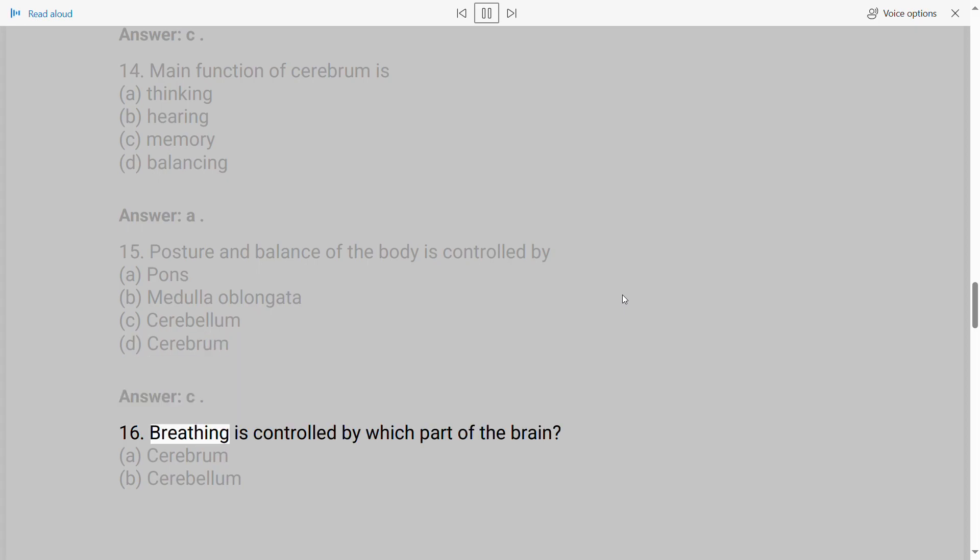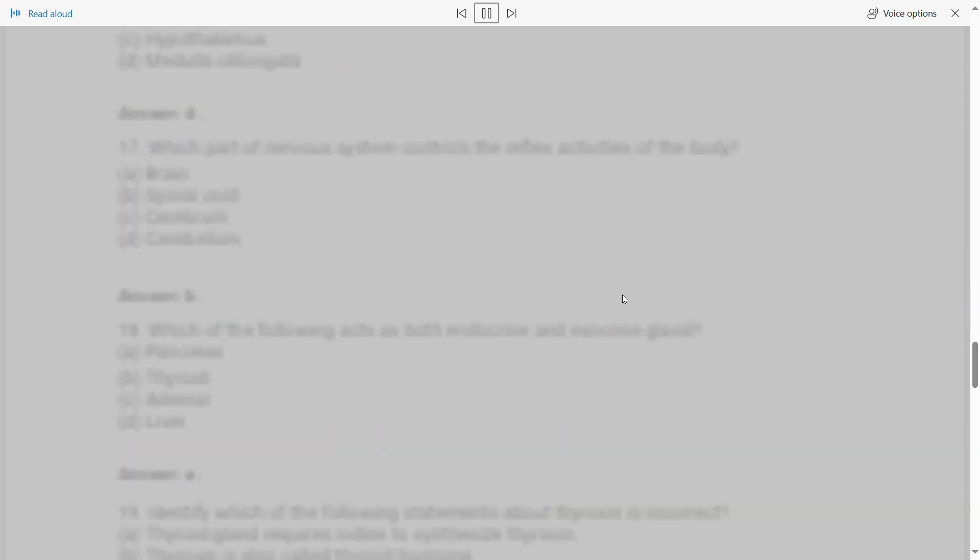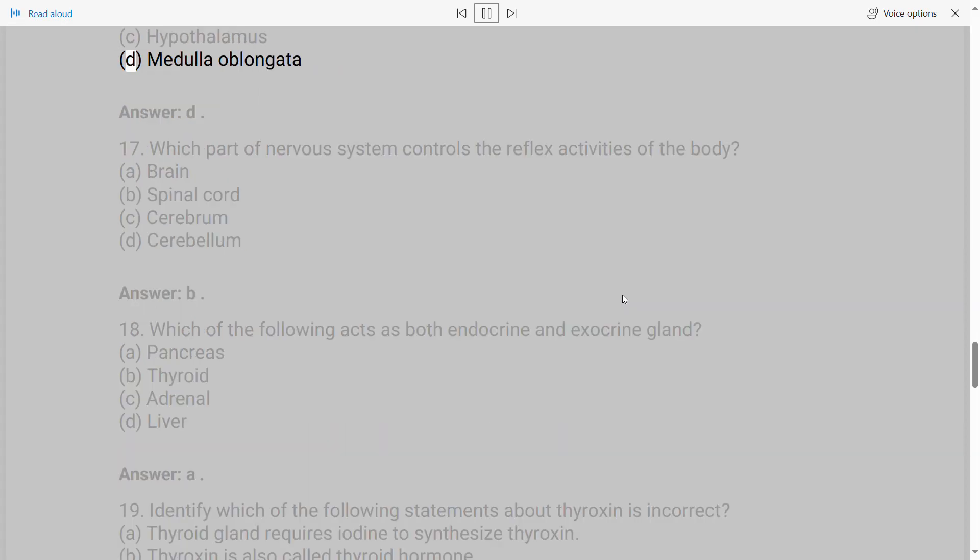16. Breathing is controlled by which part of the brain? A. Cerebrum B. Cerebellum C. Hypothalamus D. Medulla oblongata. Answer: D.